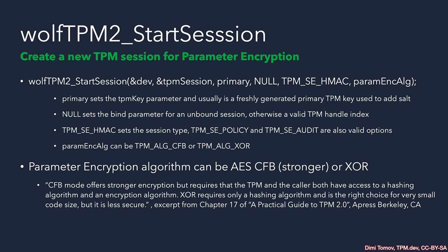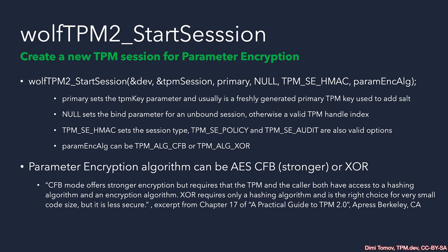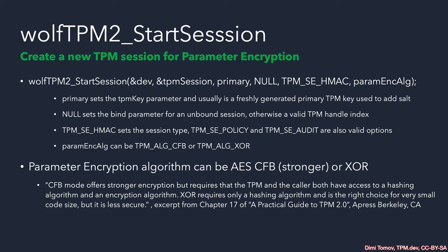Let's look at how we typically use this wrapper API. First, we need to provide the current WolfTPM device context, which we usually create at program start using `wolfTPM2_Init`. Then we provide an empty variable of type `wolfTPM2_Session` to store the newly created session. For the TPM key parameter, we specify a primary object loaded into the TPM to add salt to the session. In this case, we chose a salted session.